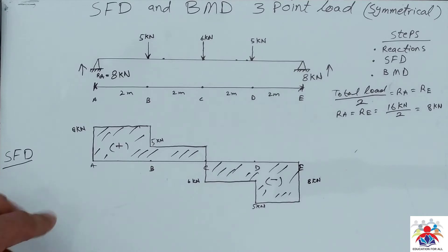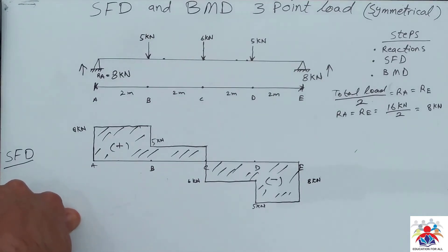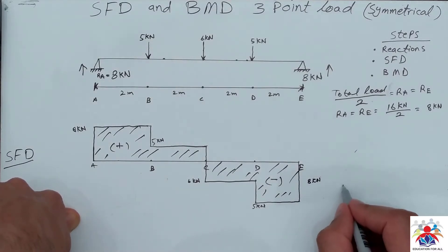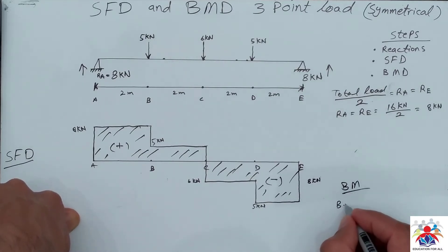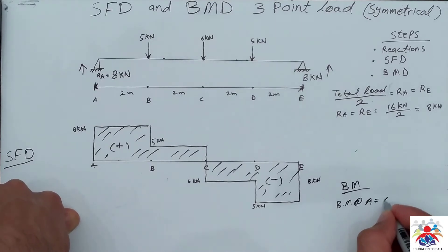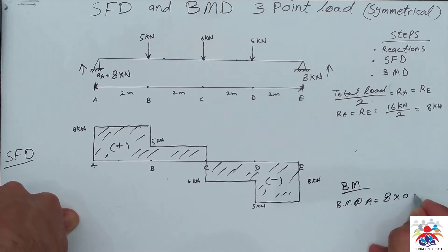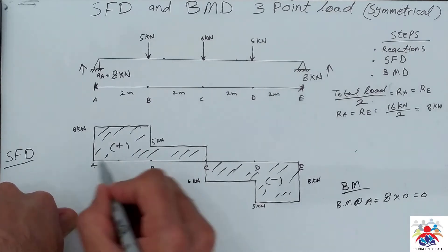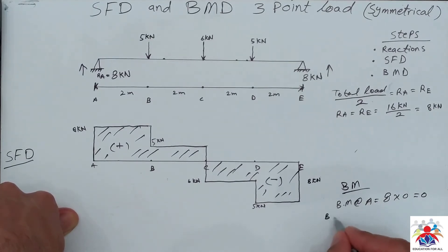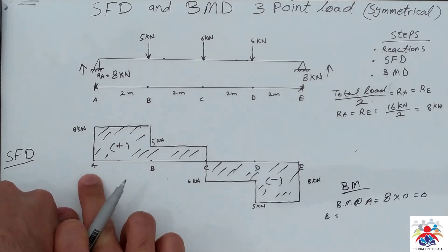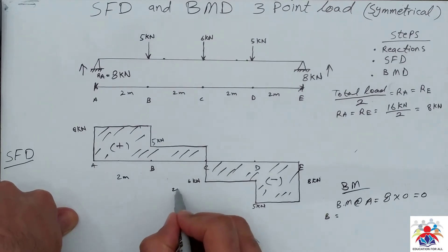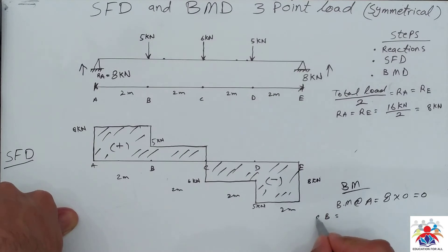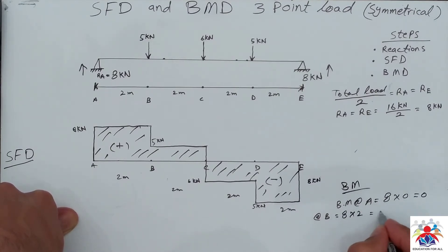Now we have to draw the bending moment diagram. Before drawing it, we need to calculate the bending moments. Bending moment at point A is always zero — 8 kilonewtons multiplied by zero equals zero, since the distance is zero. Bending moment at point B: we have 8 kilonewtons and a distance of 2 meters, so 8 multiplied by 2 equals 16 kilonewton·meters.